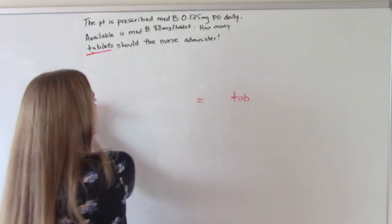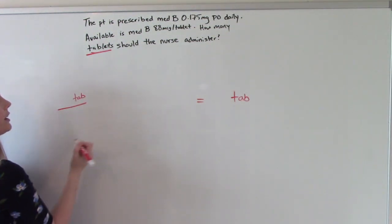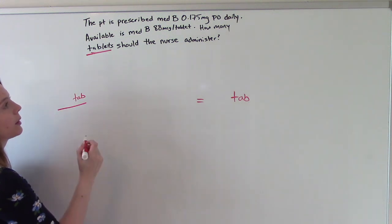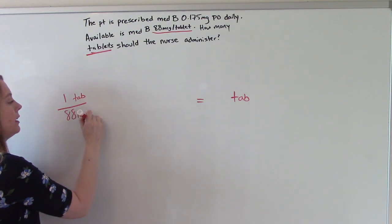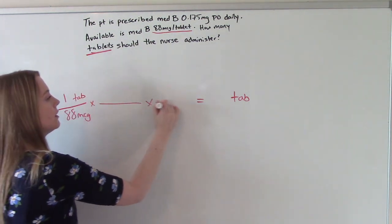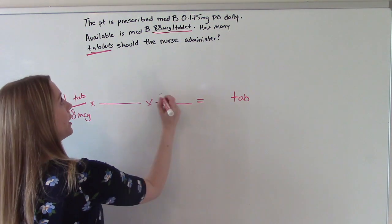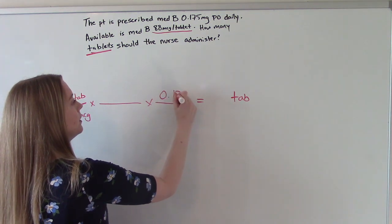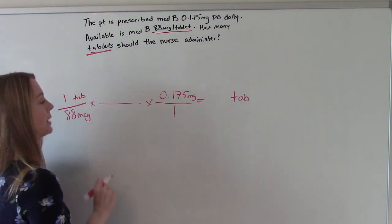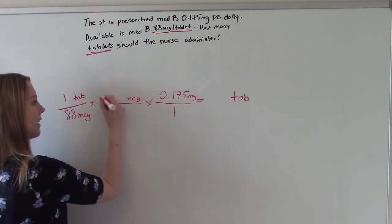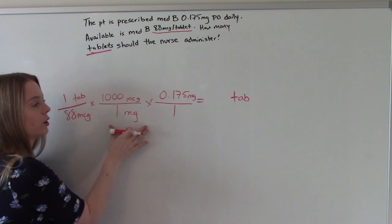So we'll put it over here. And if it's in our answer, it needs to be in our numerator. So where do we have information about tablets? Right here. So one tablet is the same as 88 micrograms. What do we know? We want to give 0.175 milligrams. And now we've got to convert micrograms to milligrams. So there are 1,000 micrograms in 1 milligram. So this is our converting equation.